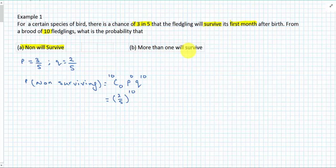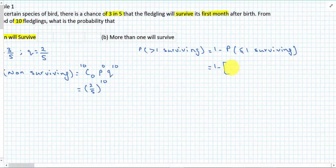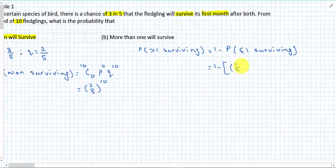More than one will survive. Okay, so this means more than one. What does it mean? It means two, three, four, five, six, seven, eight, nine, or ten. Or, a faster way of doing that, probability of greater than one surviving, we know is the same as one minus probability of less than or equal to one surviving.